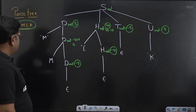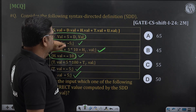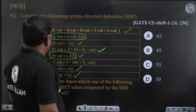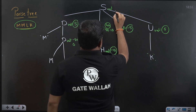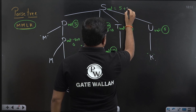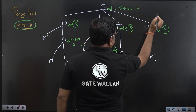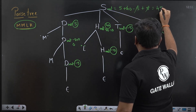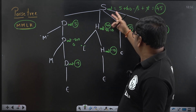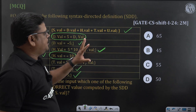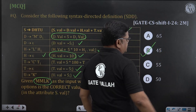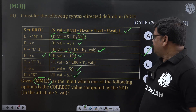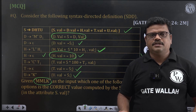Now what is the final S.val? Whenever we use the production S → DHTU, the rule says S.val is the sum of D.val, H.val, T.val, and U.val — that is 5 + 40 + (−5) + 5 = 45. So S.val is 45. Comparing with the options, the right answer is option B. For this SDT, whenever you evaluate S.val, its value will be 45 — a basic SDT evaluation.